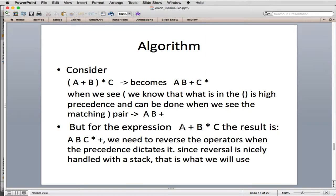But for this expression, a plus b c, there's no parentheses. We want the multiply to be more important. So you'll see the operators are out of order. So the result, actual result, should be a, b, c, and then multiply, and then add last. So we need to reverse the operators when the precedence dictates it. Since the reversal is nicely handled with a stack, that's what we're going to use.